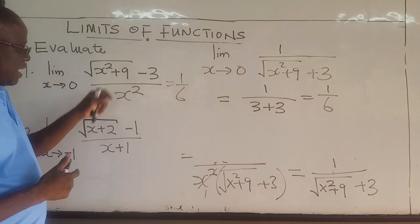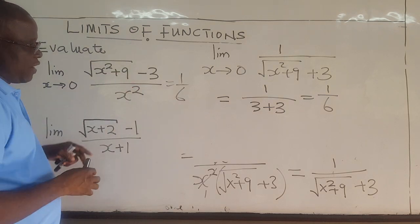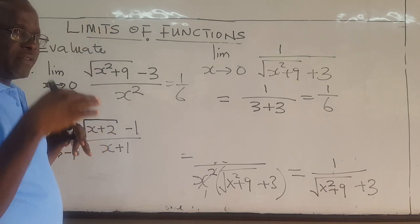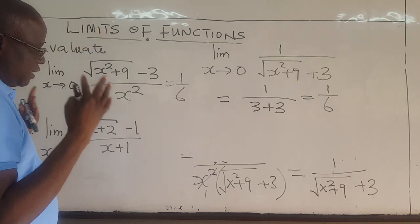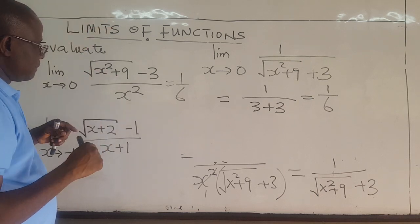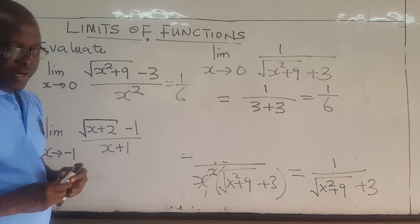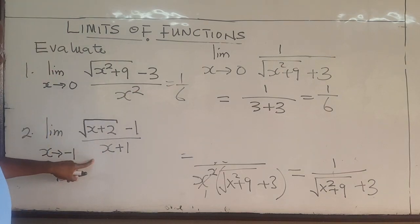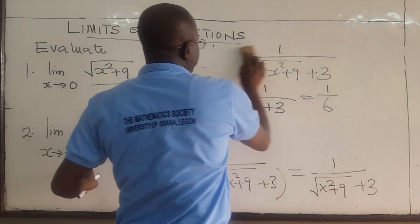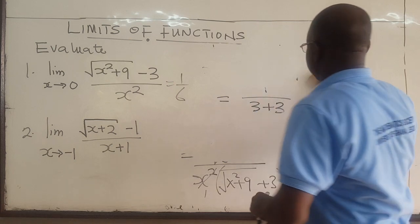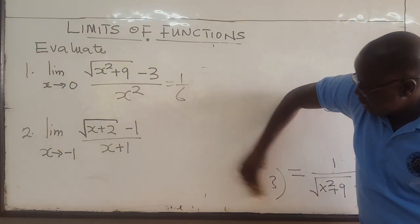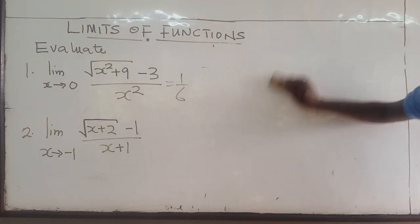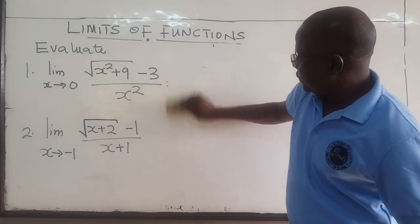In expressions like that, whenever you get an indeterminate form of 0 over 0 or infinity over infinity, you try to rationalize. Let's do the second one, which is very similar.